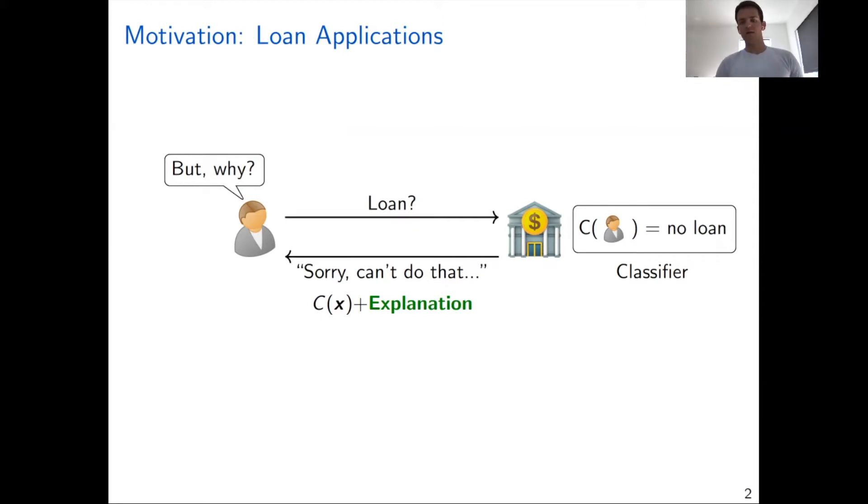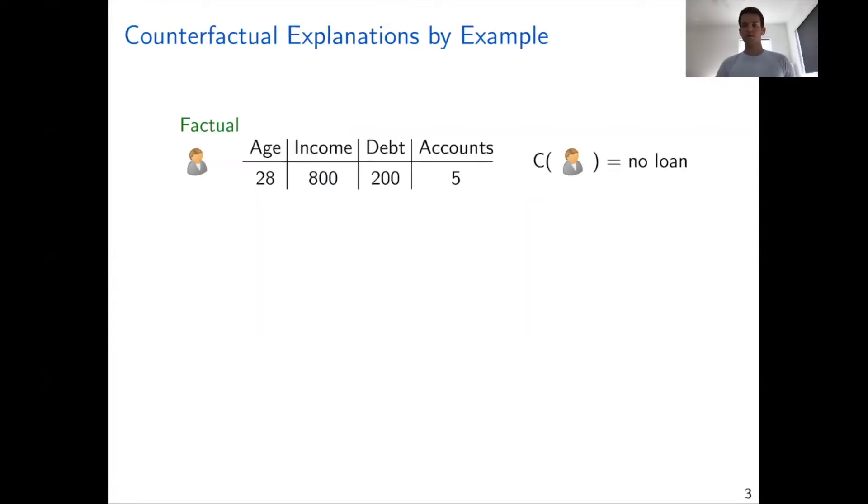There are several techniques that one could use in order to provide such an explanation. In this paper, we focus on counterfactual explanations, and I will quickly explain them by an example next. Let's consider the same customer again and assume that this customer is characterized by four features: age, income, debt, and the number of accounts.